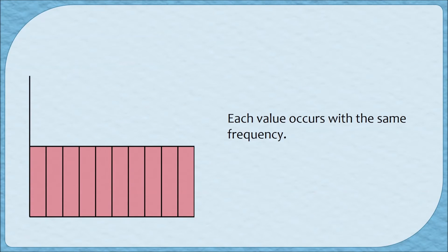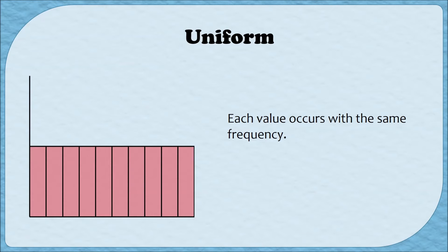Our fifth and final graph shape is kind of boring, which makes it sort of weird. In this case all of the bars have the same frequency. When all of the bars are the same height we say that the graph is uniform — kind of like if you have a group of people wearing a uniform, they all pretty much look the same. Just as we can have approximately symmetric, you can also have approximately uniform, where all the bars are not exactly the same height but they're very close to being the same.